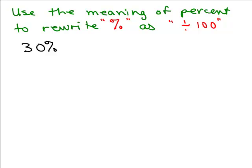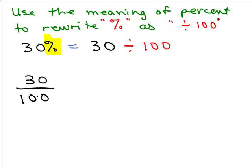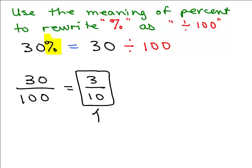We're going to use the meaning of percent to rewrite that percent symbol — what it really means is 'divide by 100.' So we can take 30 percent and rewrite it as 30 divided by 100. One meaning of dividing by 100 is to write 30 over 100. So if I were going to write this as a fraction, I could simply write it as 30 over 100 and then reduce it. Dividing the top and bottom by 10 gives me 3 tenths. So that is how to write 30 percent as a fraction — it's just written as 3 tenths.